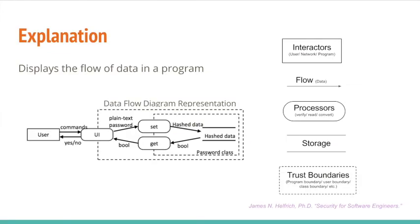A data flow diagram is a graphical representation of the flow of data through a program. There are many symbols used to show how data flows through the program.